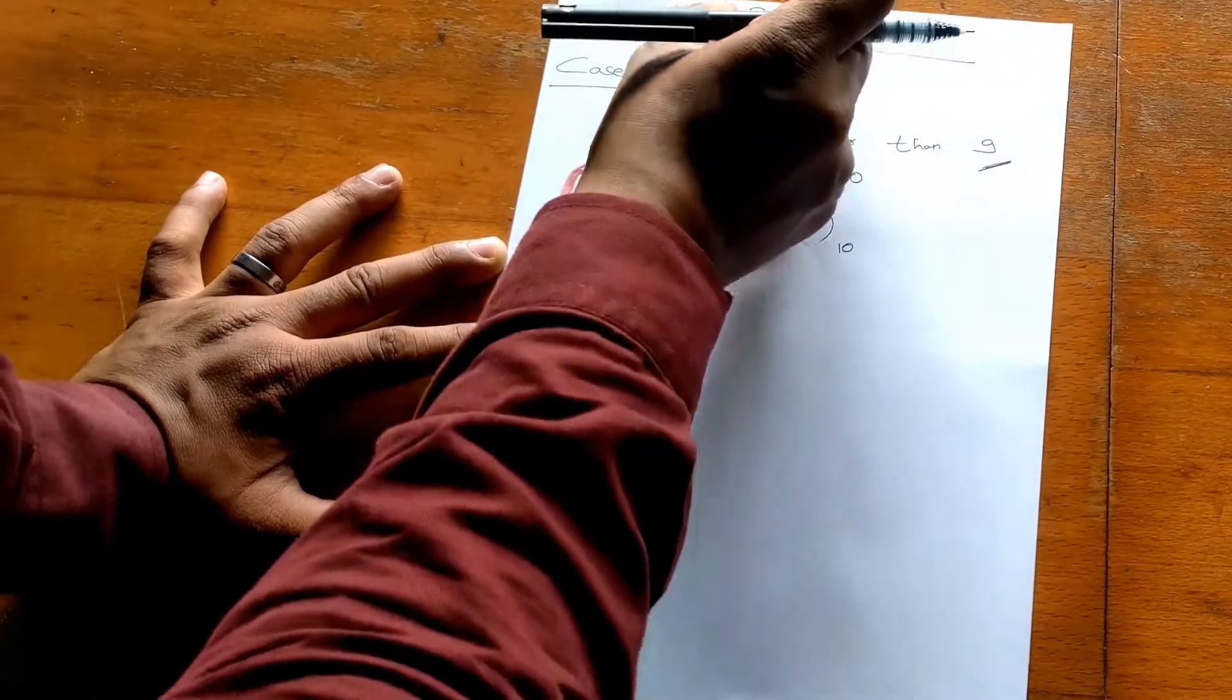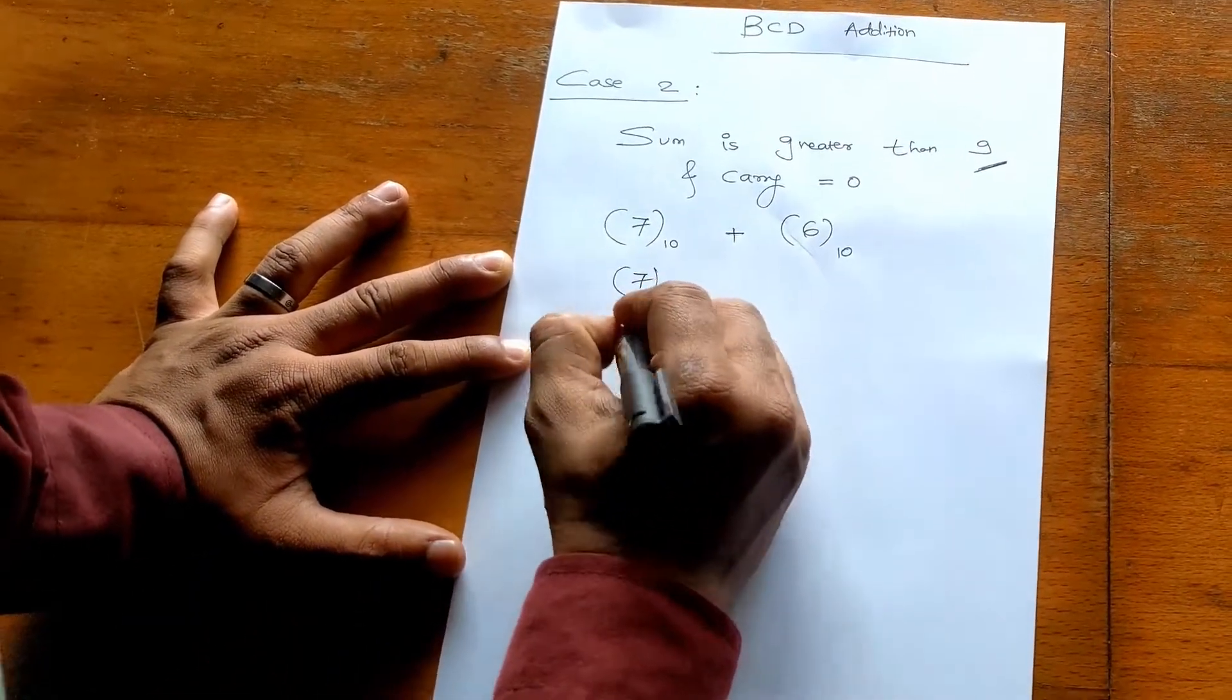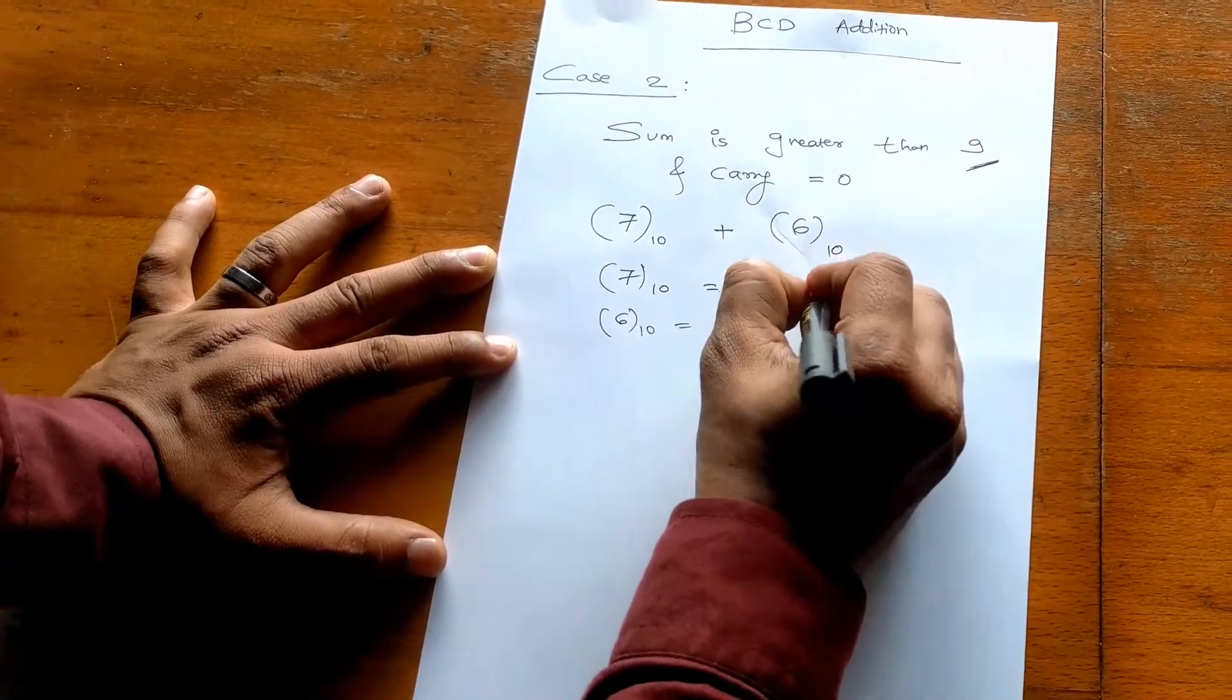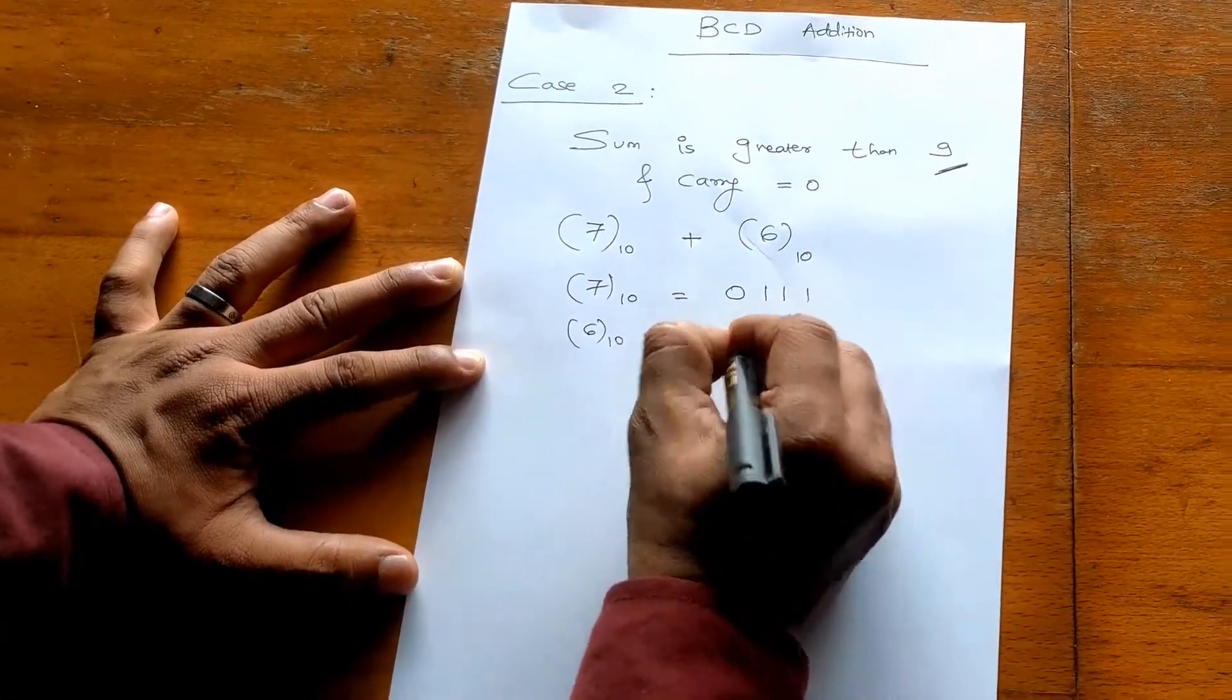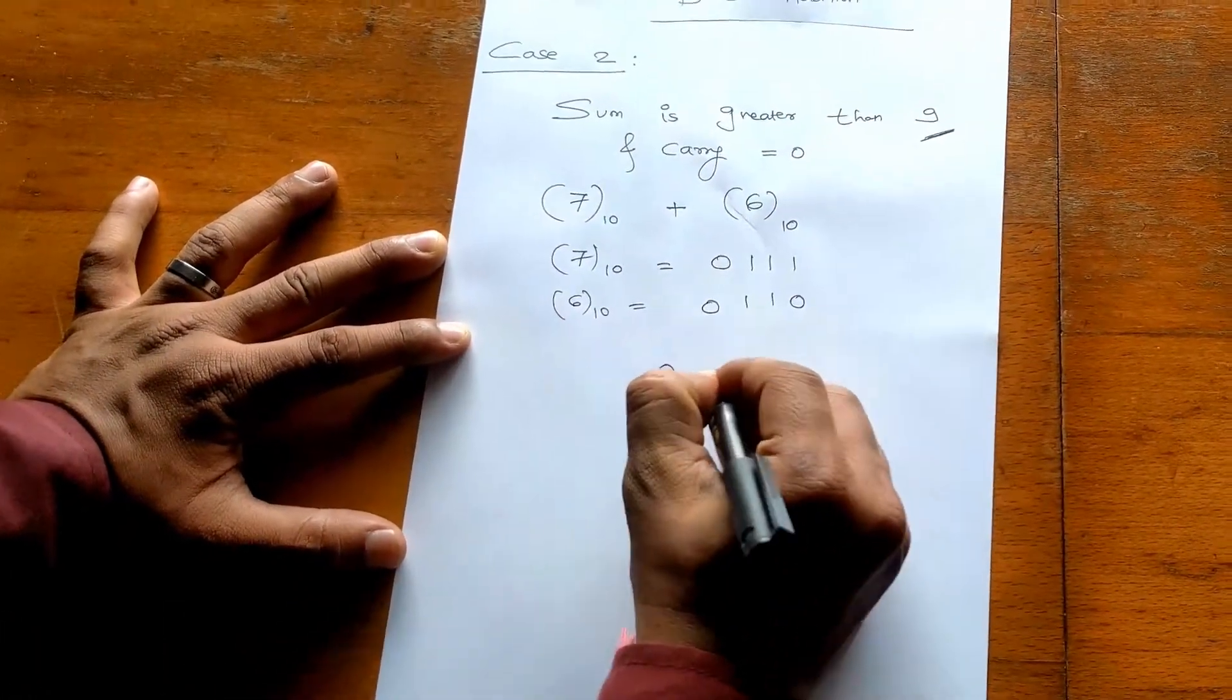First convert this into BCD. So it means 0111 for 7 and 0110 for 6. Now add these two: 0111.